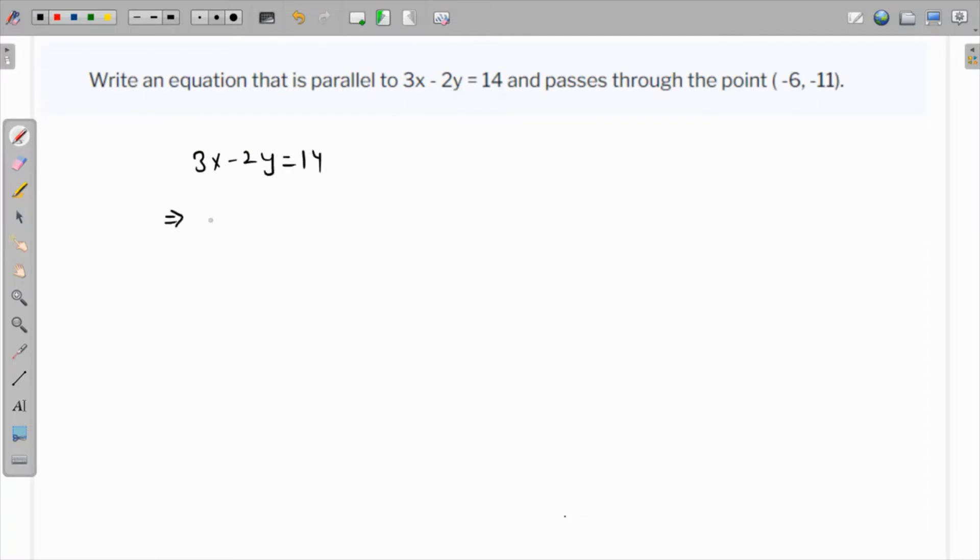This means that 3x is equal to 2y plus 14, which means that if we subtract 14 both sides we have 3x minus 14 is equal to 2y.